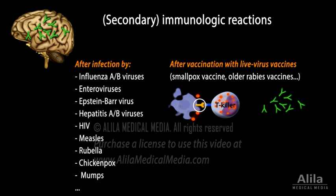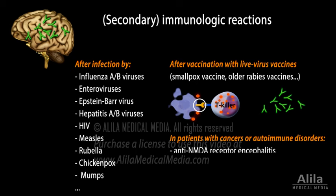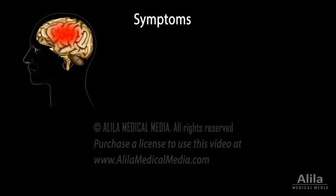Immunologically mediated encephalitis may also occur in patients with cancers or autoimmune disorders. Examples are anti-NMDA receptor encephalitis and VGKC complex antibody encephalitis, in which the immune system targets the NMDA receptor and VGKC protein complex respectively.